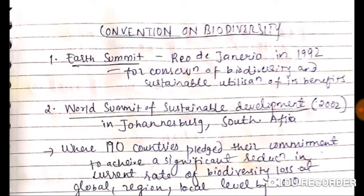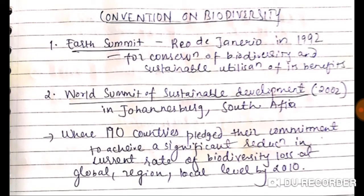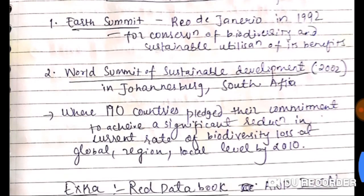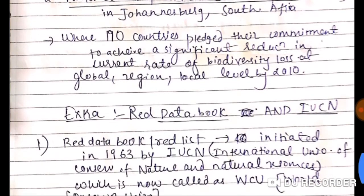Regarding conventions on biodiversity: the Earth Summit was held in Rio de Janeiro in 1992, focused on conservation of biodiversity and sustainable utilization of its benefits. The World Summit on Sustainable Development was held in 2002 in Johannesburg, South Africa, where 190 countries pledged to achieve a significant reduction in the current rate of biodiversity loss at global, regional, and local levels by 2010.